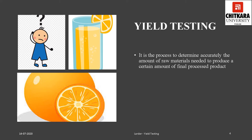Yield testing is defined as a technique to determine accurately the amount of raw materials needed to produce a certain amount of final processed product. These processes may include trimming, butchering, cutting, or some combination of these. During these processes, fat, bone, and other inedible or unnecessary parts are removed. In some cases, fat is also removed by melting during the cooking process. All these processes result in weight loss, so the quantity available for portioning or serving weighs less than the quantity originally purchased. For effective yield testing, it is important to weigh the item after each set of processes is completed.